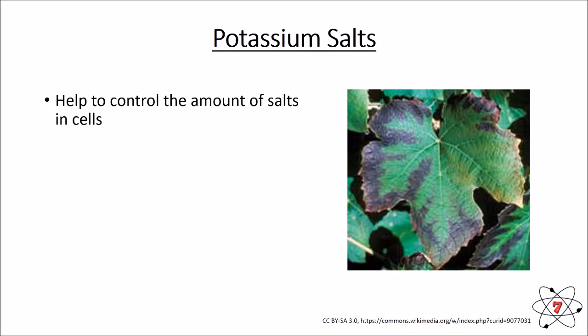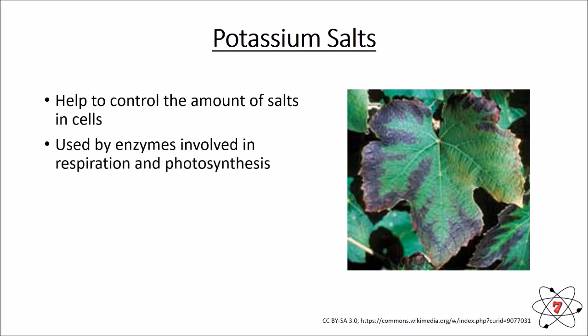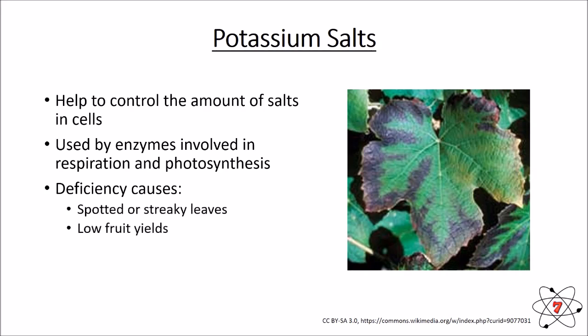Potassium is another key salt. Potassium helps to regulate and control the amount of other salts in all of the cells, and it's also used by enzymes that are involved in respiration and photosynthesis. If you don't have enough potassium you generally have spotted or streaky leaves, and again a low fruit yield, because without enough respiration and glucose you're not going to be making fruits.